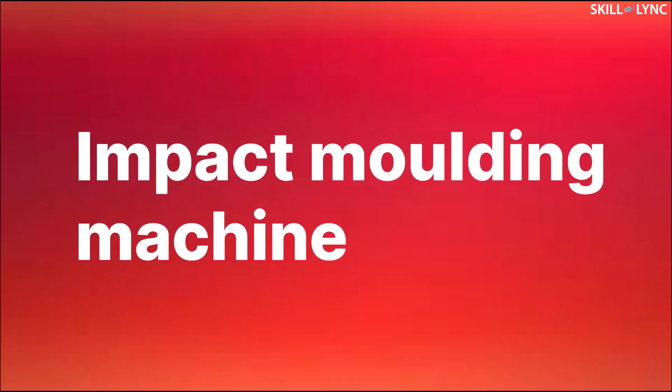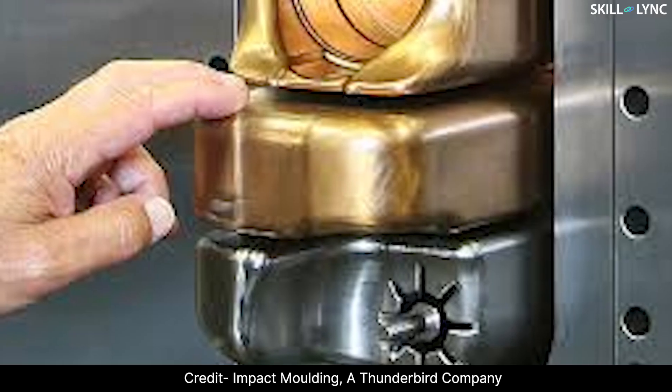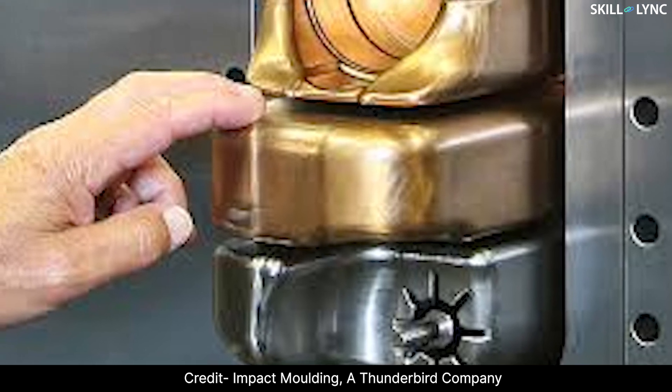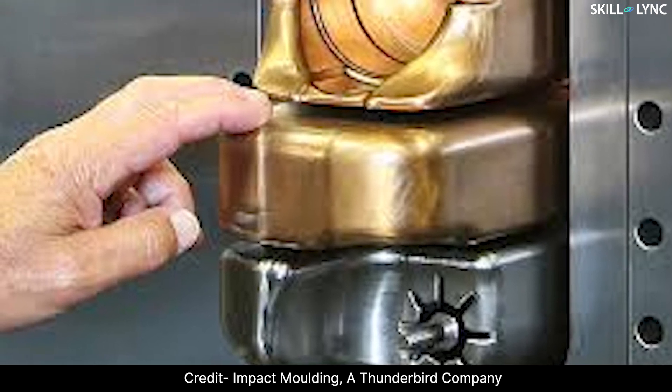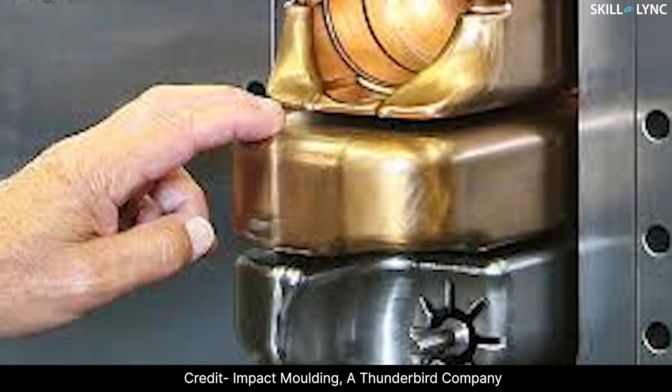Now let's move on to the impact molding machine. In this molding machine, controlled explosions are used to compress the sand. Besides explosions, the sand is also compressed by an immediate release of highly compressed gases into the mold. With the help of these machines, molds with uniform strength and good permeability can be obtained.